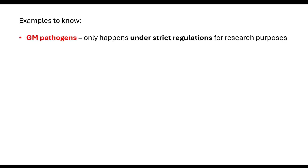It's important to know some examples. One example is GM pathogens — genetically modified pathogens. This is a real problem: if we were genetically modifying pathogens and they were able to get out into the general population, that could cause widespread disease. Therefore, genetically modified pathogens can be produced, but only under strict regulations and only for research purposes — for example, trying to find a way to cure a disease or prevent an outbreak from occurring.